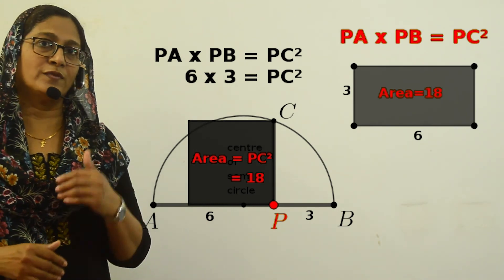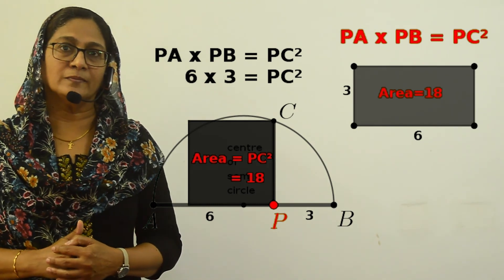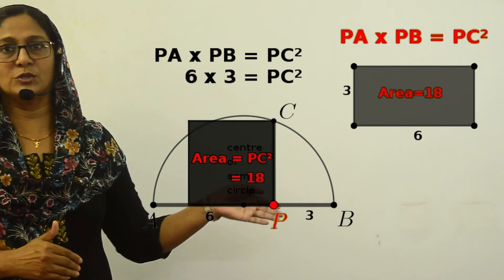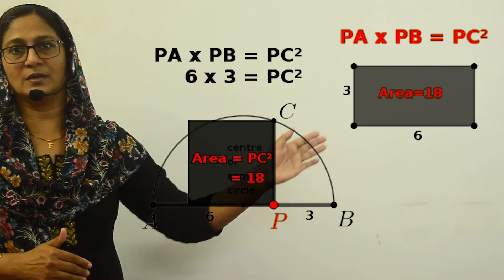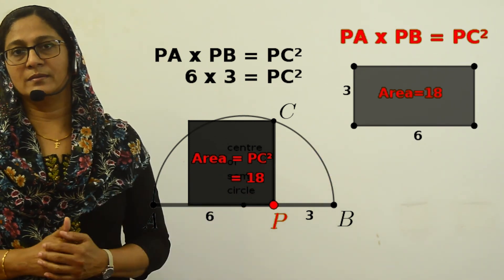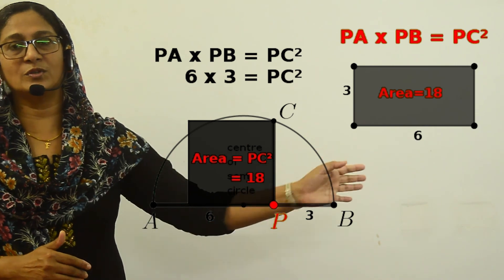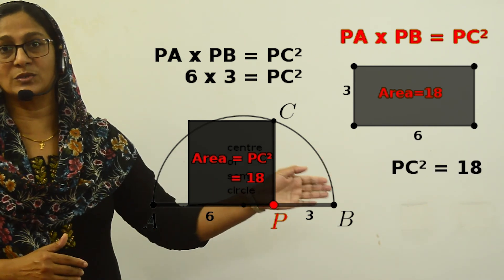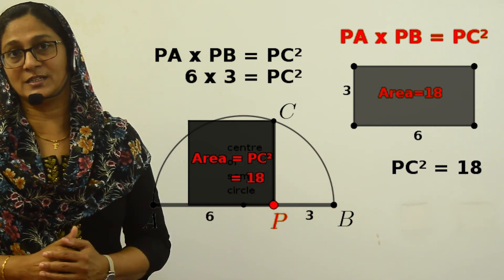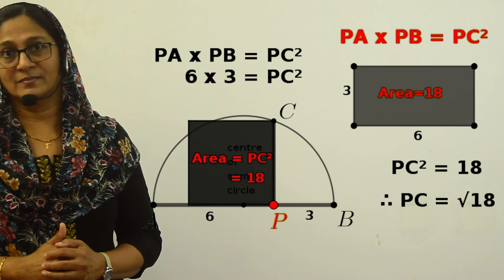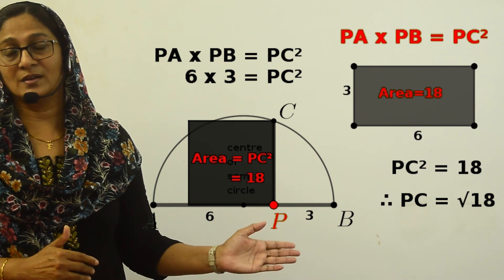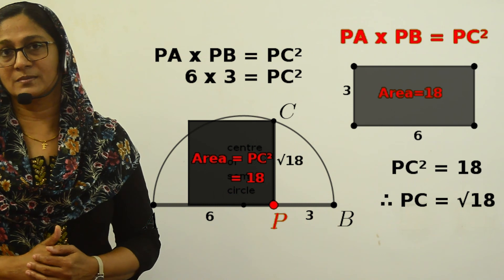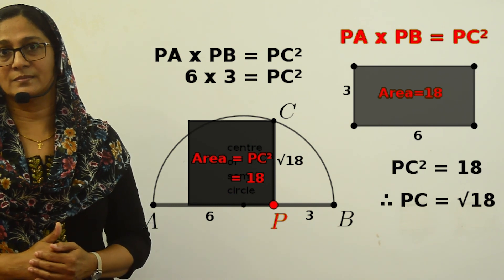Let's also find out the length of PC. PA into PB equals 6 into 3 equals 18. PC squared is equal to 18. So PC is equal to the square root of 18. Therefore, the side of the square is √18 centimeters.